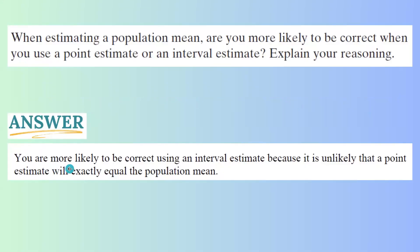The answer is we are more likely to be correct using an interval estimate. Why? Because it's unlikely that a point estimate will exactly be equal to the population mean. Remember that if you take just one sample, that sample gives you one value representing the population parameter, so instead we build a confidence interval.